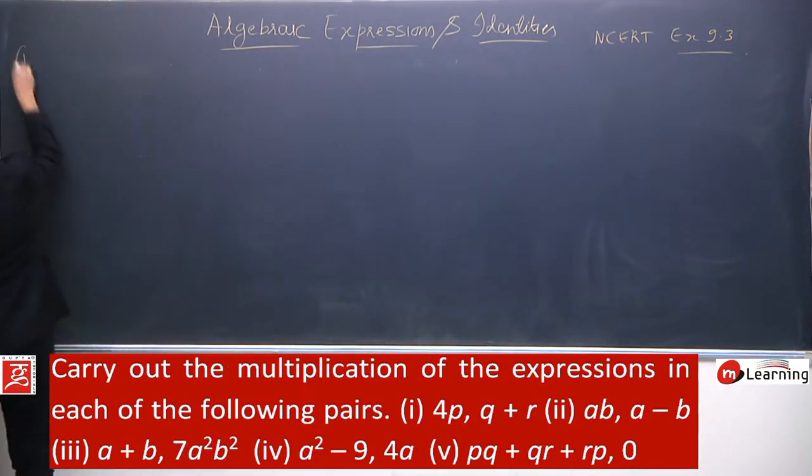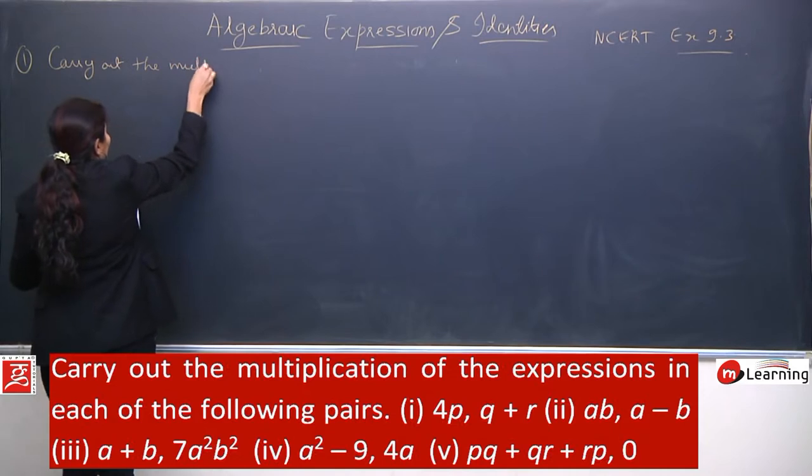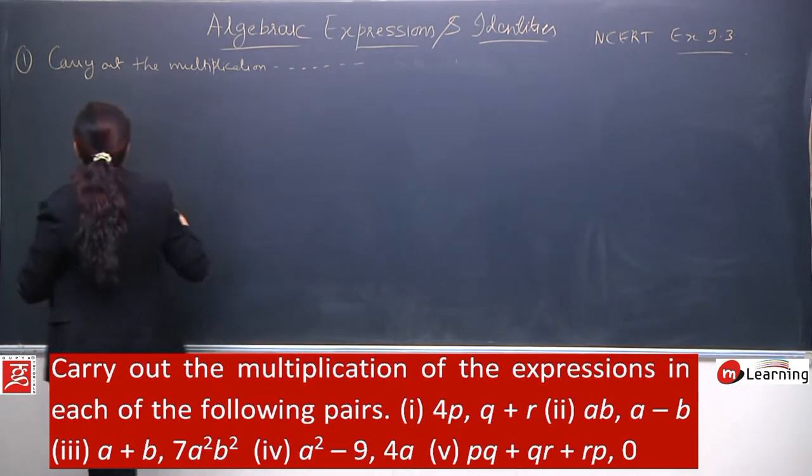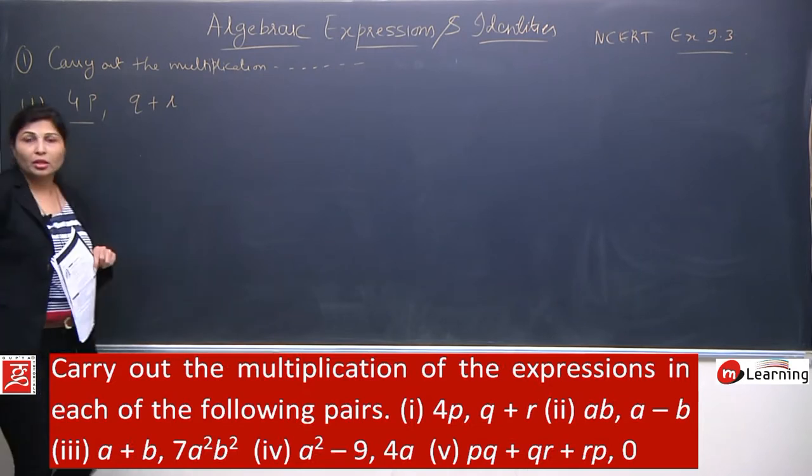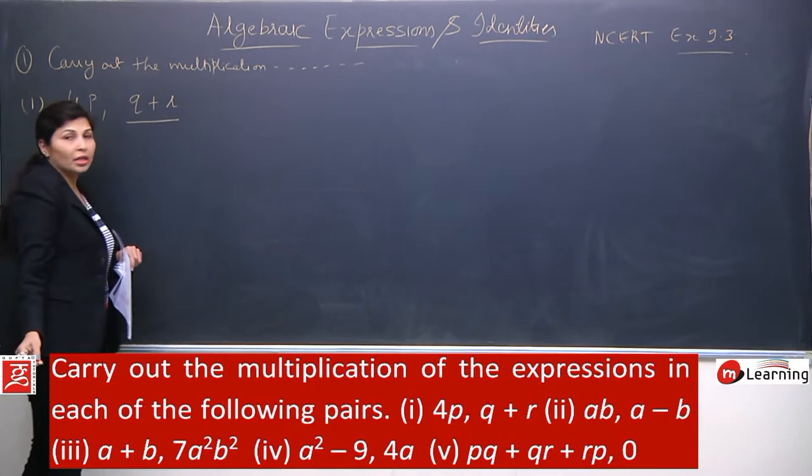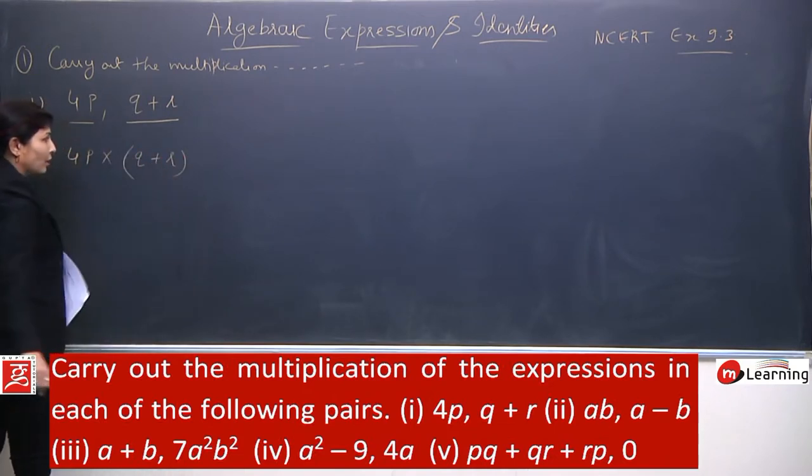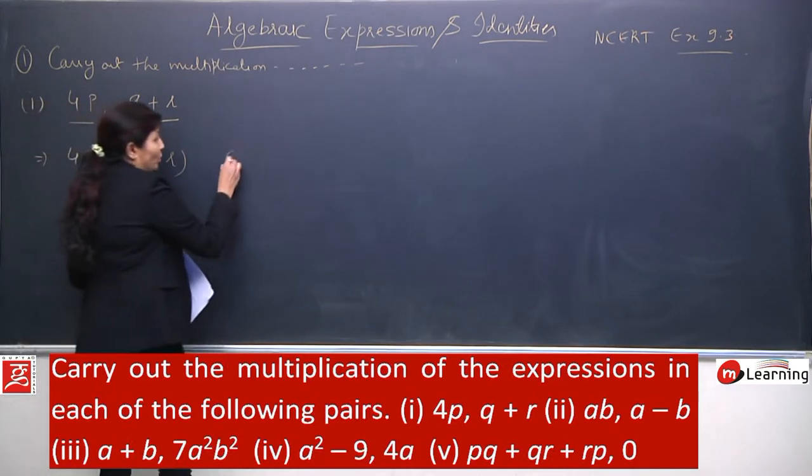First question is: carry out the multiplication of the expressions in each of the following pairs. First is 4p and q plus r. You can clearly see the first expression has only one term and the second expression has two terms. So it's a binomial and it's a monomial. We need to find their product. This second term we need to write in brackets because it's a binomial. This term will multiply with all the terms inside.